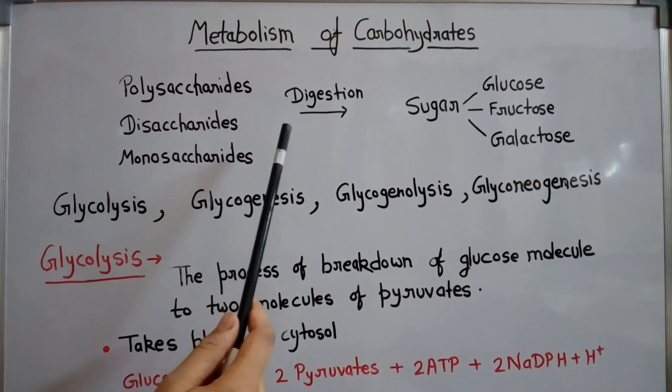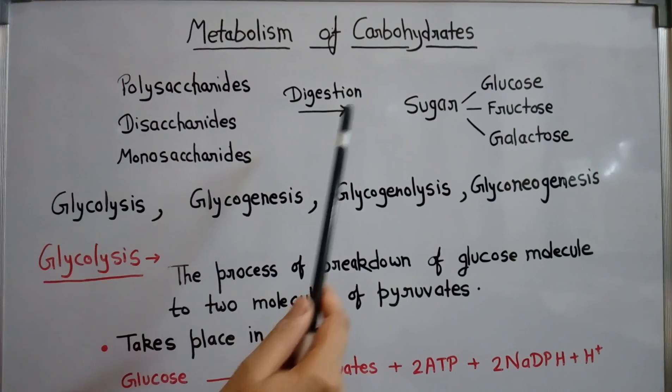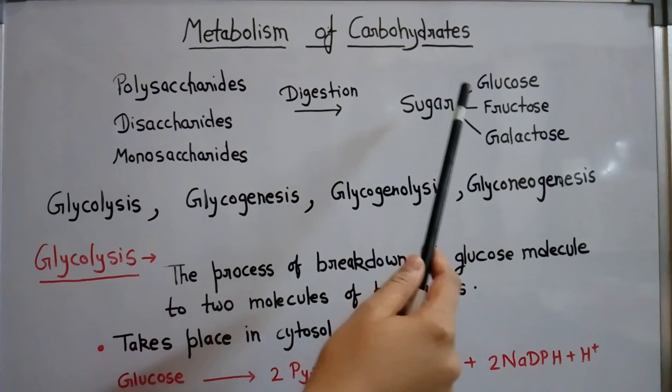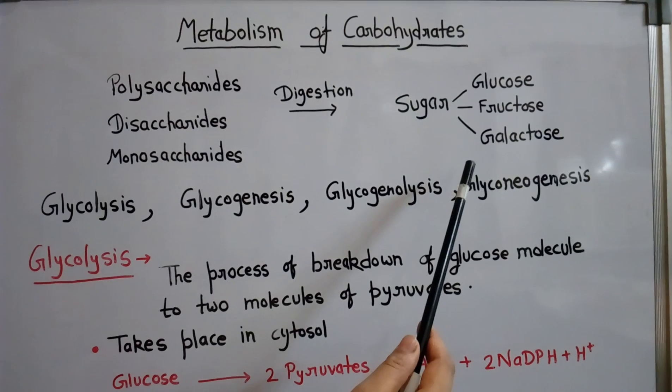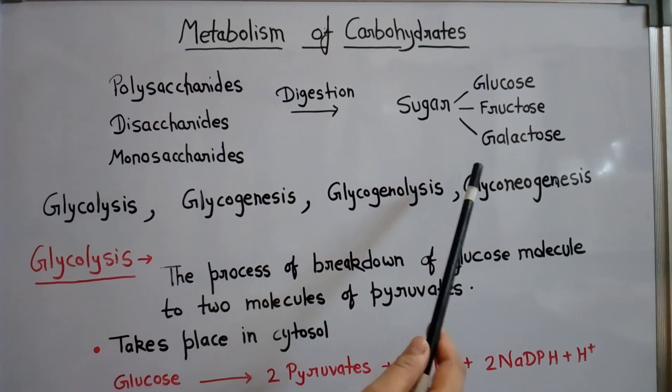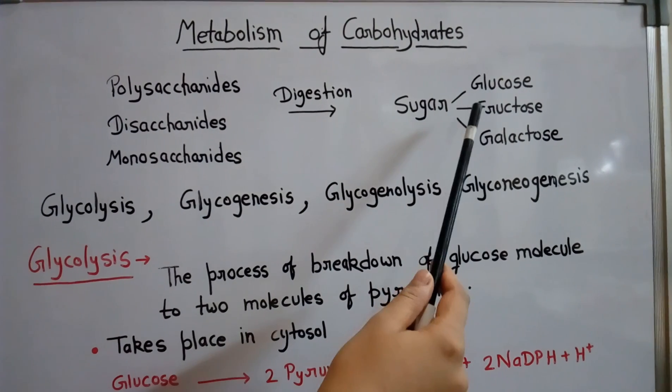After digestion, all these forms are converted to sugar. Sugar may be glucose, fructose, or galactose. The main part of the sugar is glucose.